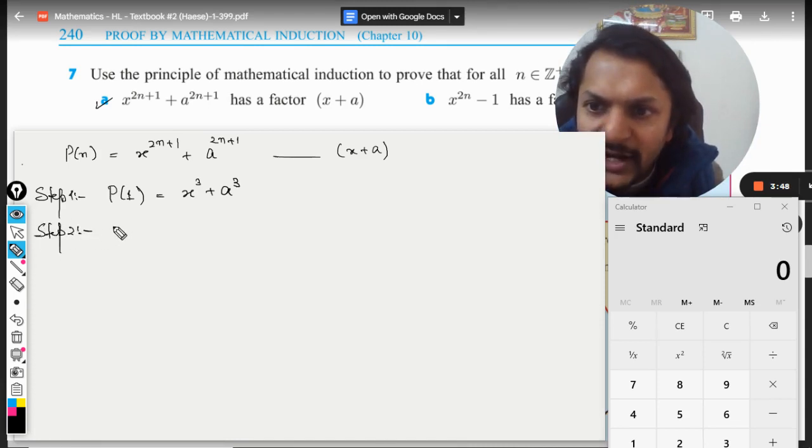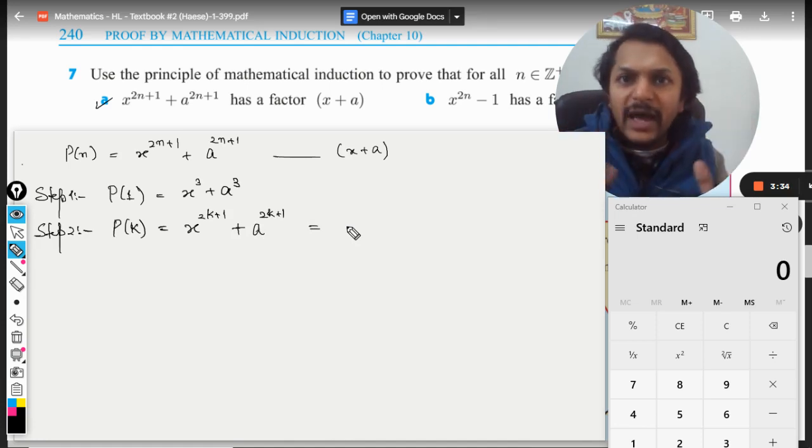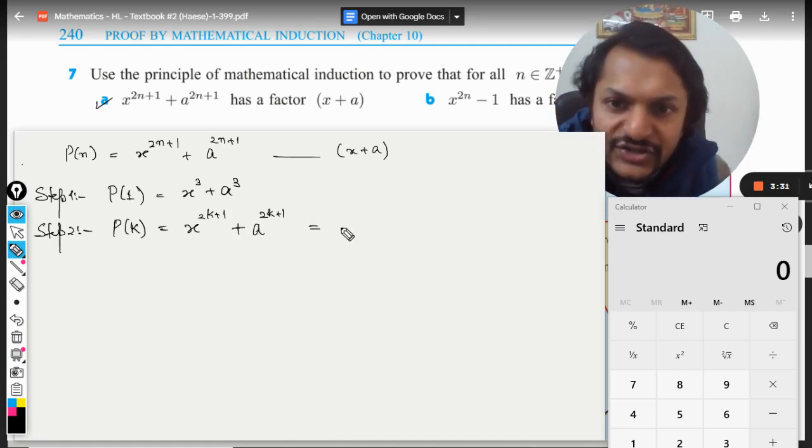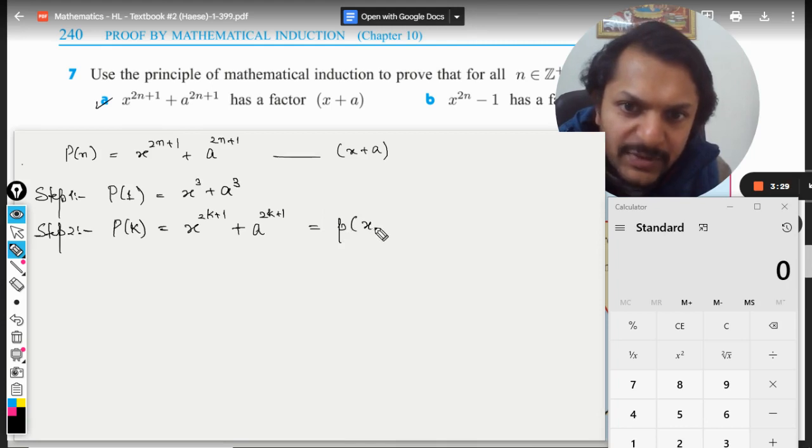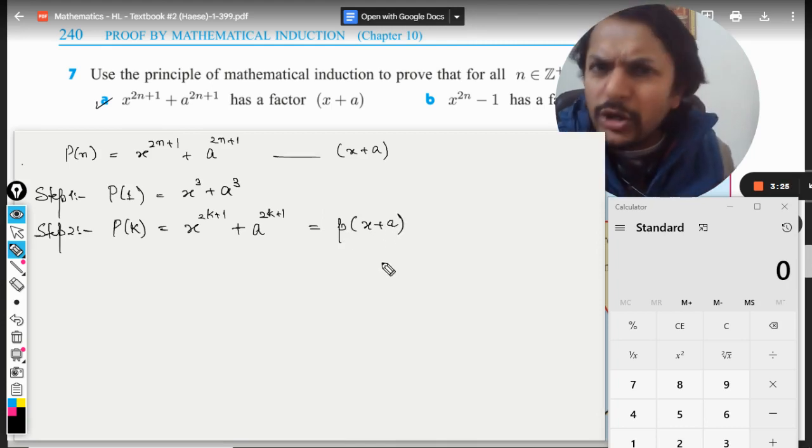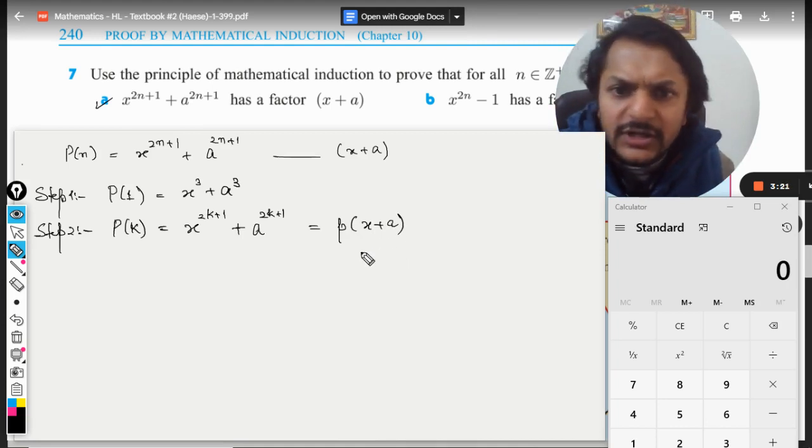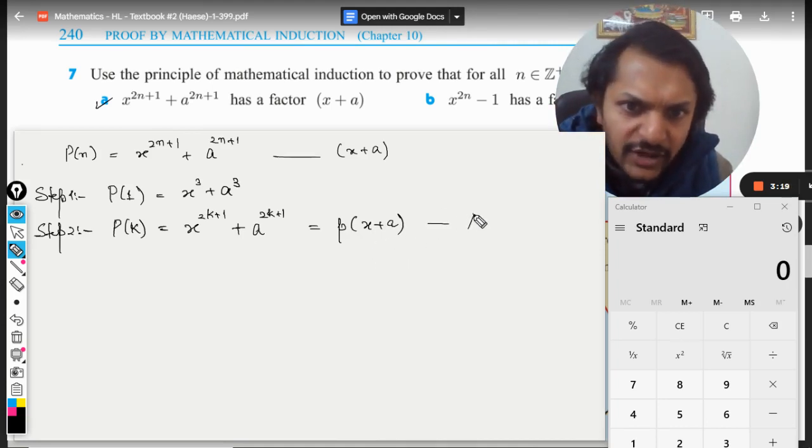I assume that this statement—that is, x raised to power 2k+1 plus a raised to power 2k+1—is divisible by x+a. So how can I write that? I can substitute it as P into (x+a), where P is any polynomial. It can be a real number, whatever. So this is our assumption now.